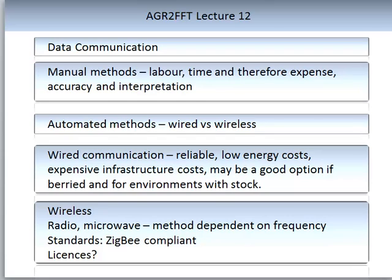Another important component of sensing is data collection and communication. Manual methods rely on the user collecting the data themselves — this is high in labor, costly in time, and accuracy depends on the user, so interpretation can vary if different people are recording. Automated methods fall into two categories: wired and wireless. Wired communication is reliable with low energy costs but expensive in initial infrastructure; it may be a good option if your sensor is buried and you have stock roaming around.